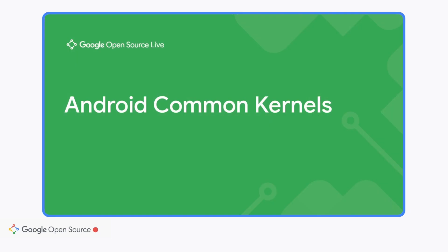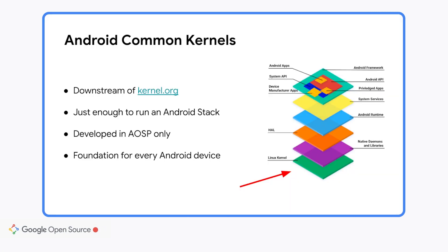First of all, I would like to introduce you to the Android common kernels, ACK, as it's commonly abbreviated. The ACK are based on the Linux kernel, and hence all Android kernel development happens as a fork of the upstream kernel — in other words, downstream of the kernel.org releases. Those releases include the ones done by Linus Torvalds, release candidates, as well as full releases. Additionally, and relevant for the actual binary shipped on devices, we ingest long-term support, LTS kernels.